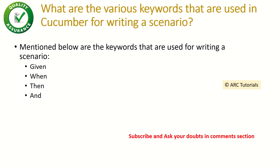What are the various keywords used in cucumber for writing a scenario? When writing a test scenario, we use four keywords: given, when, then, and and. For example: 'given this particular user is logged in, when the user clicks on a particular link, then the user is navigated to the dashboard, and finally sees the report.' There are four keywords — given, when, then, and and.